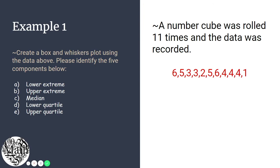Welcome back, and here is our independent practice for today. Example number one, you're going to create a box and whisker plot using the data. You're going to identify the five-number summary, and then graph it. The problem says a number cube was rolled 11 times, and the data was recorded. And there is your data.